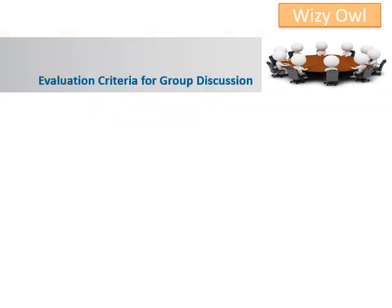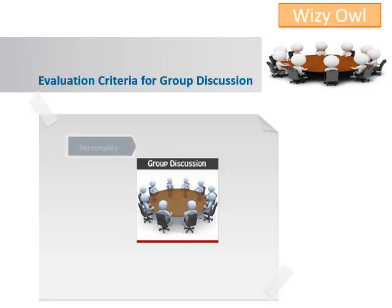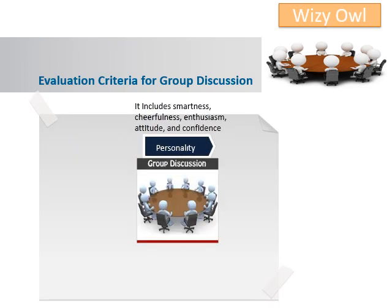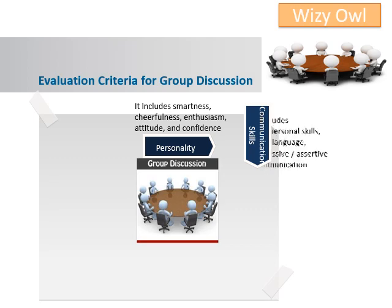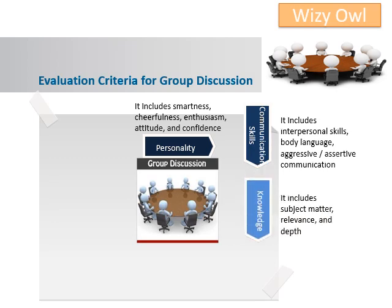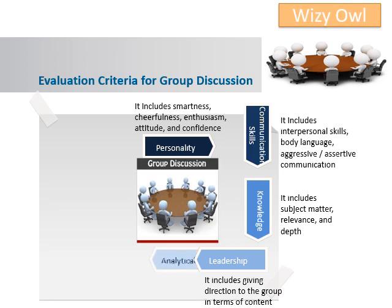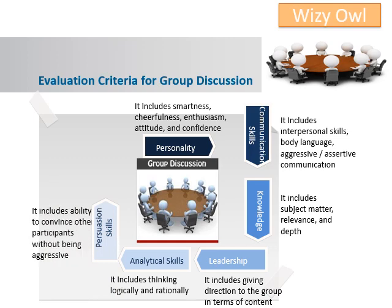Now let's have a look at the evaluation criteria for group discussions. Personality includes smartness, cheerfulness, enthusiasm, attitude, and confidence. Communication skills includes interpersonal skills, body language, and assertive communication. Knowledge includes subject matter relevance and depth. Leadership includes giving direction to the group. Analytical skill includes thinking logically and rationally. Possession skills include the ability to convince other participants without being aggressive. Creativity includes thinking out of the box.